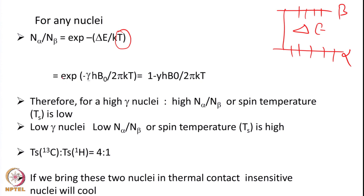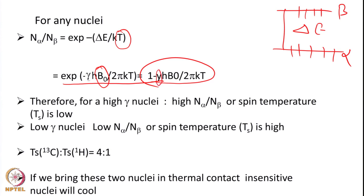If we expand the population formula, we get a B0 dependence. The separation between the two states depends upon B0. At the same B0, delta E is more for proton, so proton is more sensitive; if it is less, it is less sensitive. That is why proton is more sensitive and carbon-13 and nitrogen-15 are less sensitive — because gamma for proton is high compared to carbon-13 and nitrogen-15.